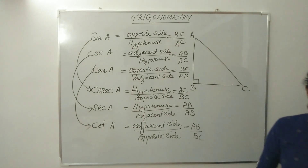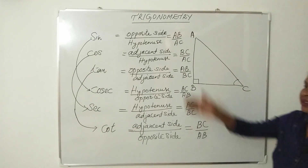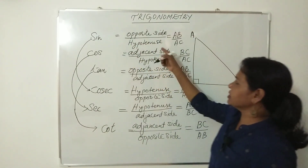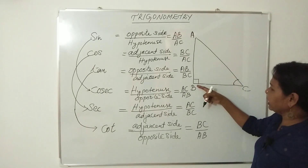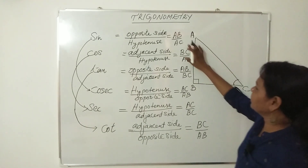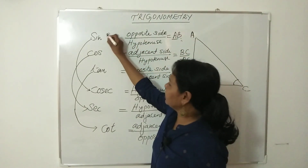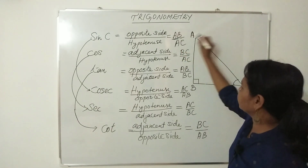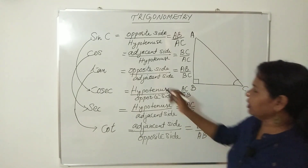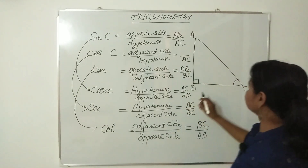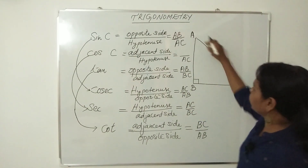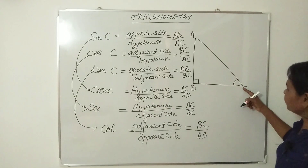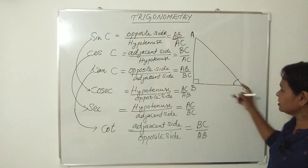Now let us consider angle C and find the trigonometric ratios. For angle C, the opposite side is AB and the adjacent side is BC. Sin C equals opposite over hypotenuse, that is AB divided by AC. Cos C equals adjacent over hypotenuse, that is BC divided by AC. Tan C equals opposite over adjacent, that is AB divided by BC.